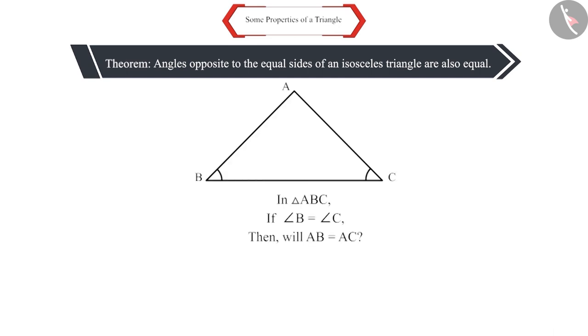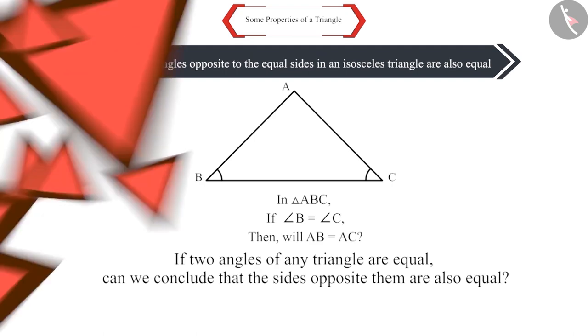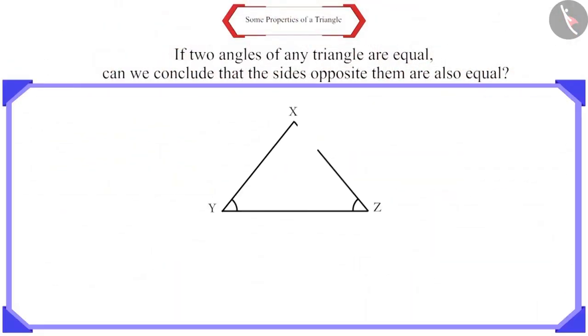Is the converse also true? So, if two angles of any triangle are equal, can we conclude that the sides opposite them are also equal? Let's see. Let's take a triangle XYZ, in which angle XYZ and angle XZY are equal. Now, we have to prove that the opposite sides are equal.